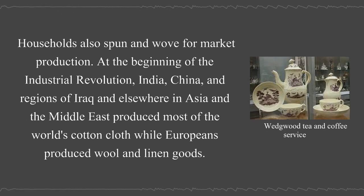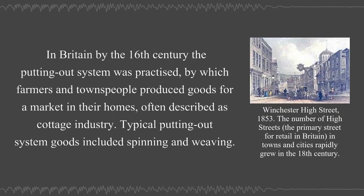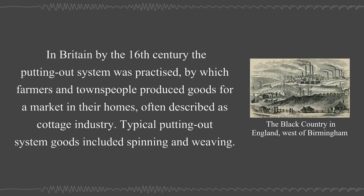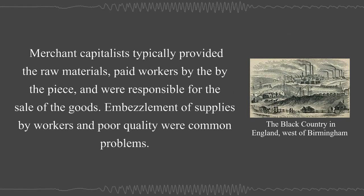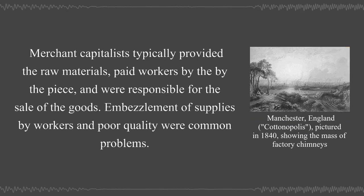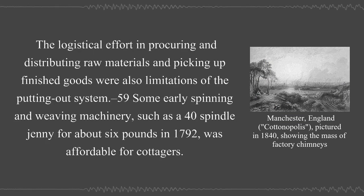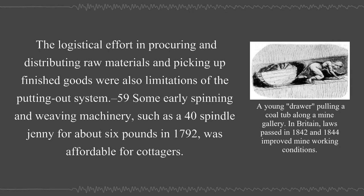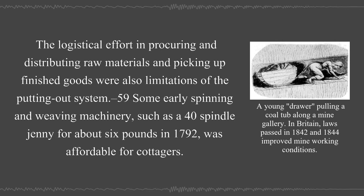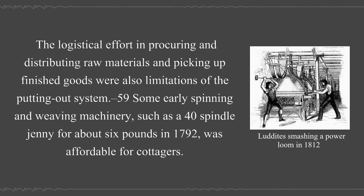At the beginning of the Industrial Revolution, India, China, and regions of Iraq and elsewhere in Asia and the Middle East produced most of the world's cotton cloth, while Europeans produced wool and linen goods. In Britain by the 16th century, the putting-out system was practiced, by which farmers and townspeople produced goods for a market in their homes, often described as cottage industry. Merchant capitalists typically provided the raw materials, paid workers by the piece, and were responsible for the sale of the goods. Embezzlement of supplies by workers and poor quality were common problems. Some early spinning and weaving machinery, such as a 40-spindle jenny for about 6 pounds in 1792, was affordable for cottagers.